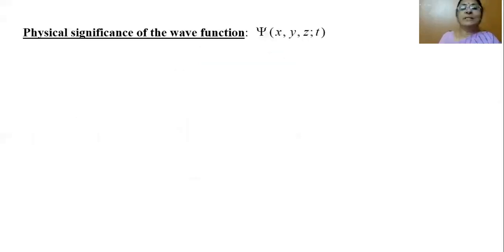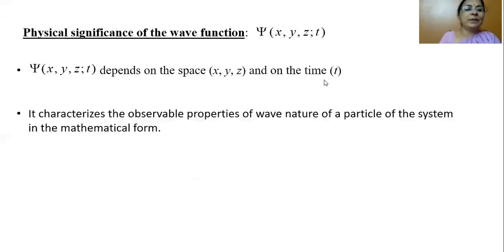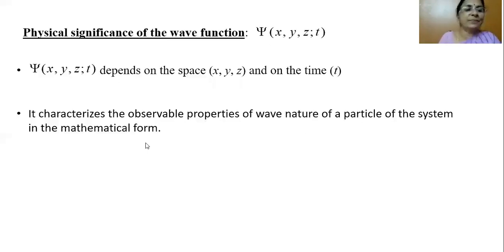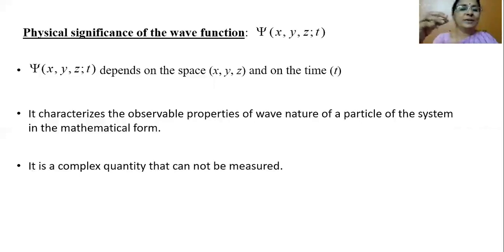Now let us look at the physical significance of the wave function. By looking at the expression, we can say that the wave function psi depends on space and on time. It characterizes the observable properties of the wave nature of a particle of the system in mathematical form. So psi will give you values of observable properties in terms of some mathematical expressions. Psi is a complex quantity that cannot be measured. Suppose you want to measure the thickness of this pen — you can use a screw gauge and find out. But psi cannot be measured; it's a complex quantity involving space and time.